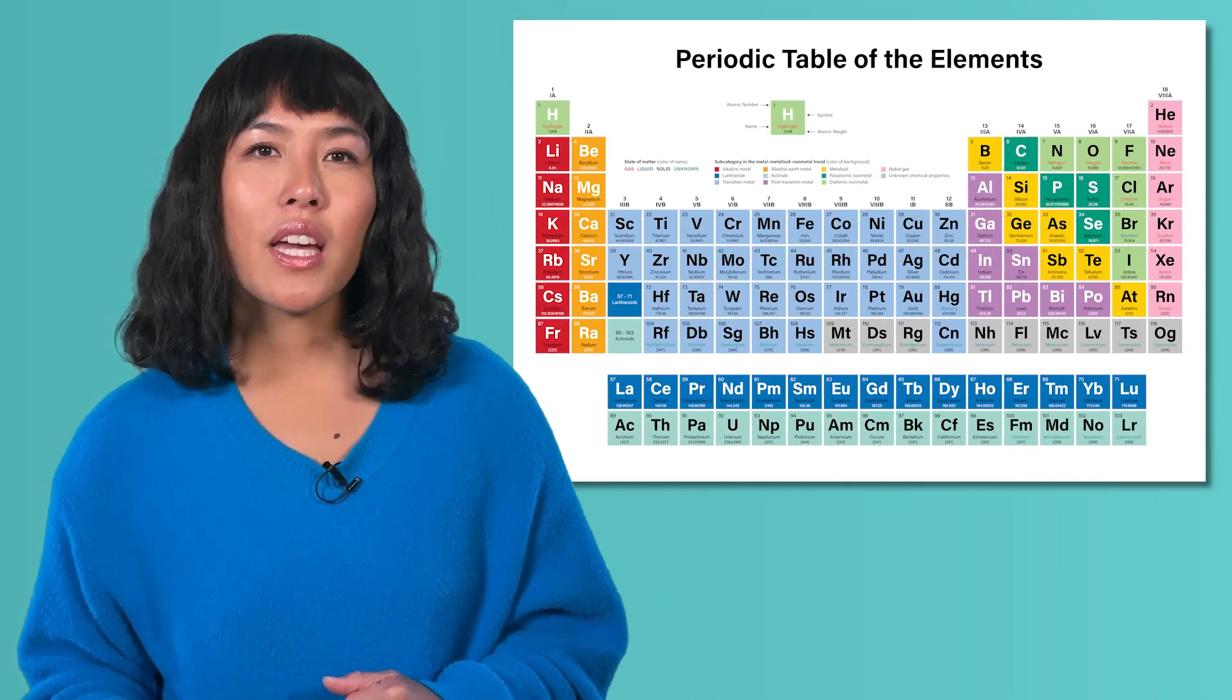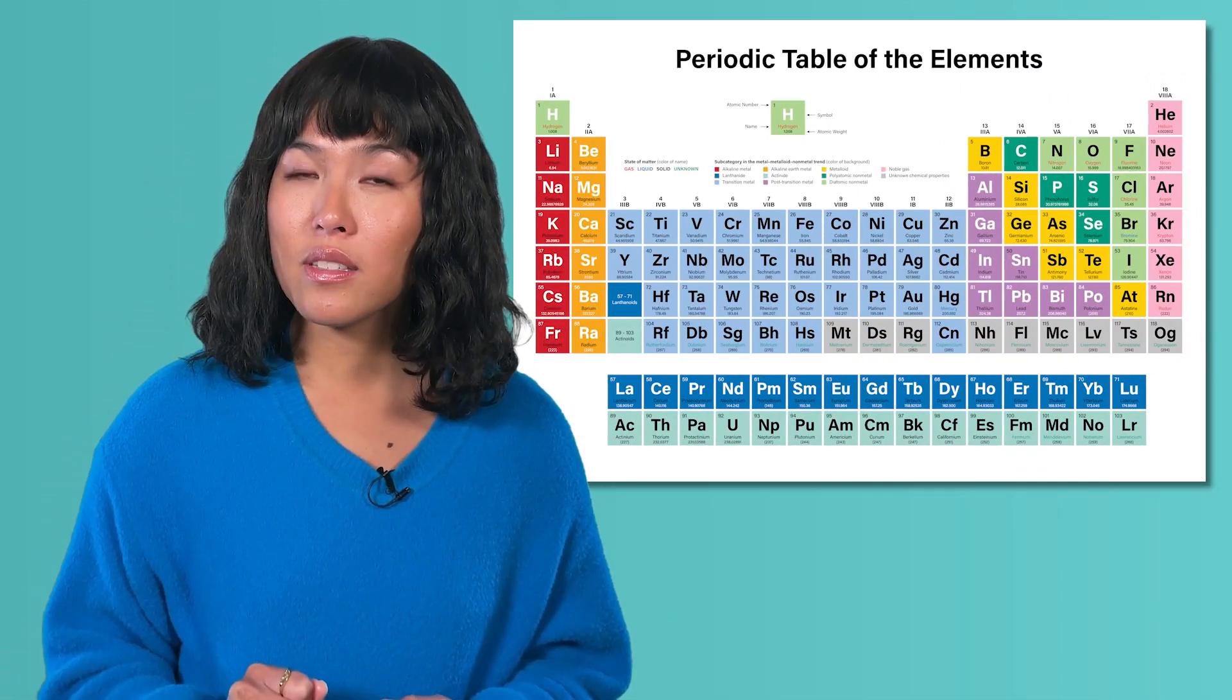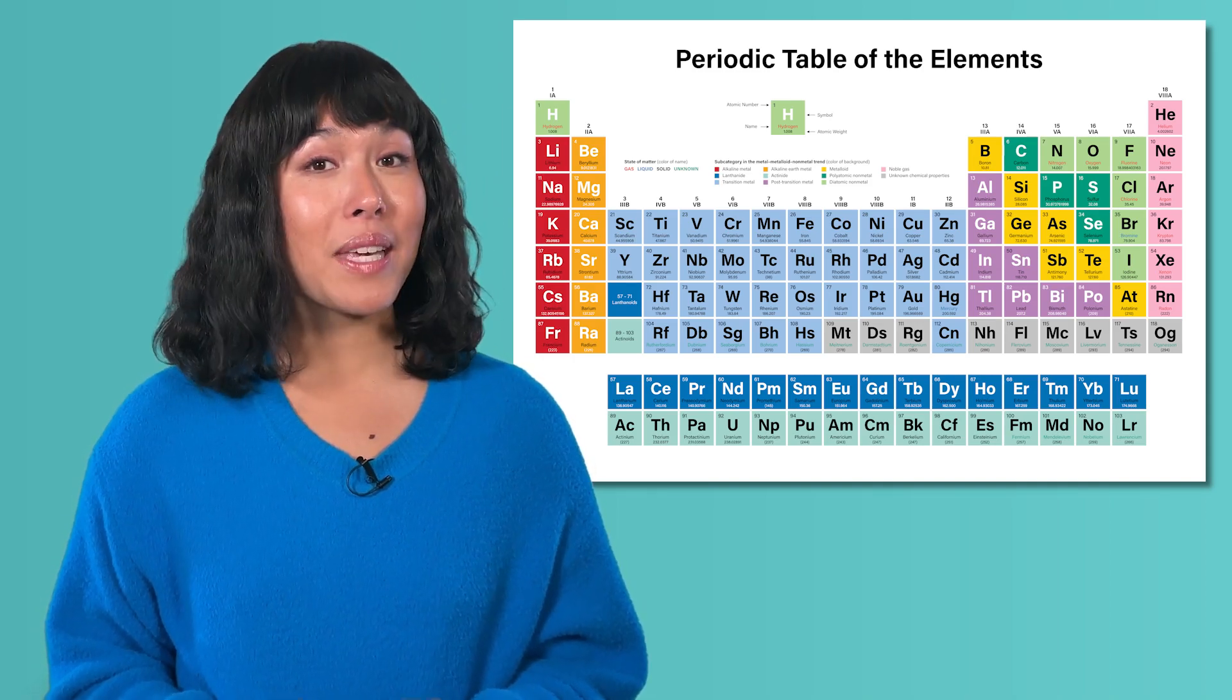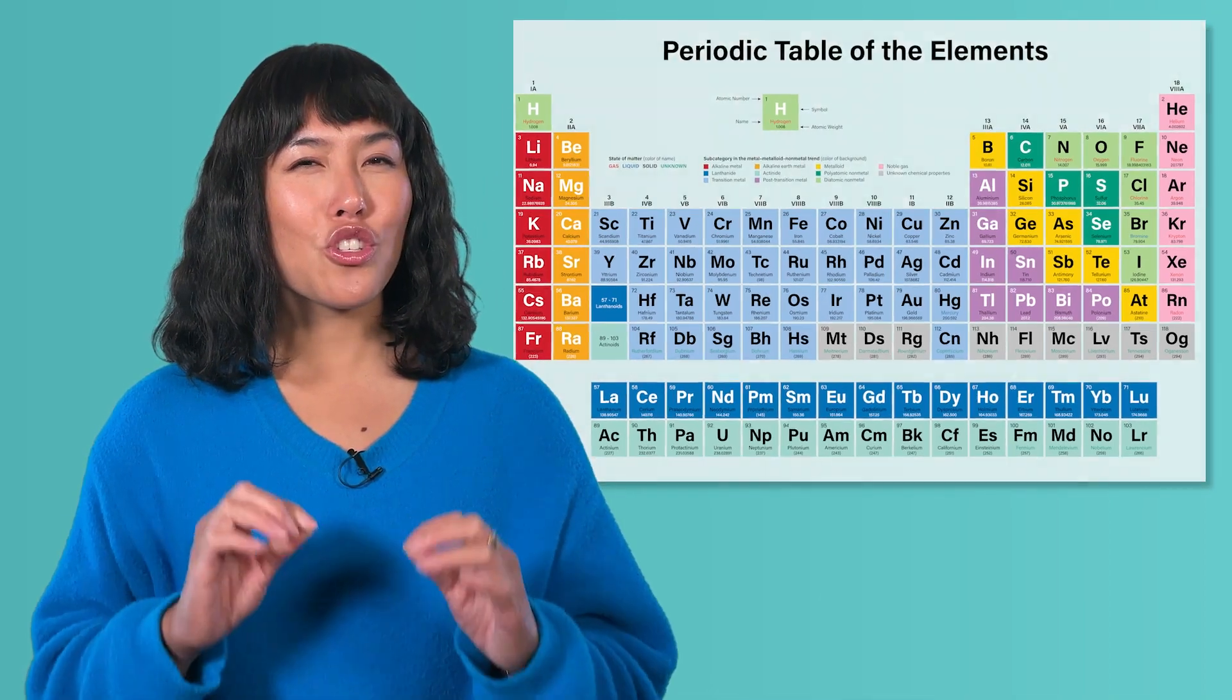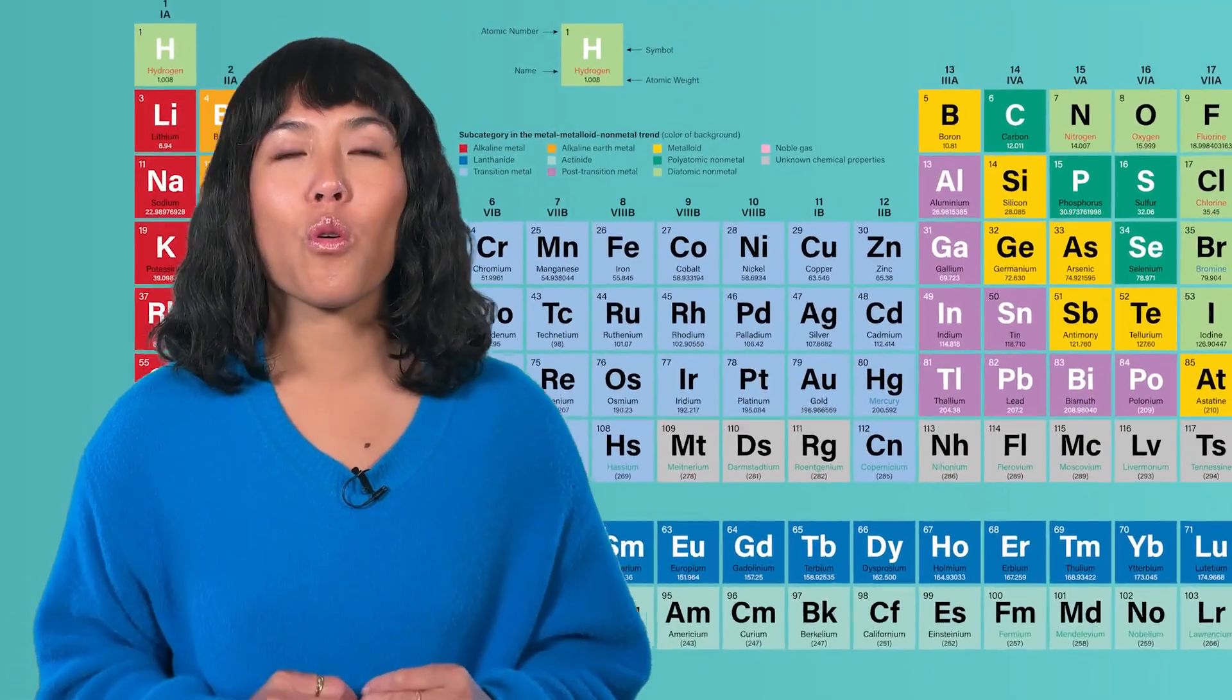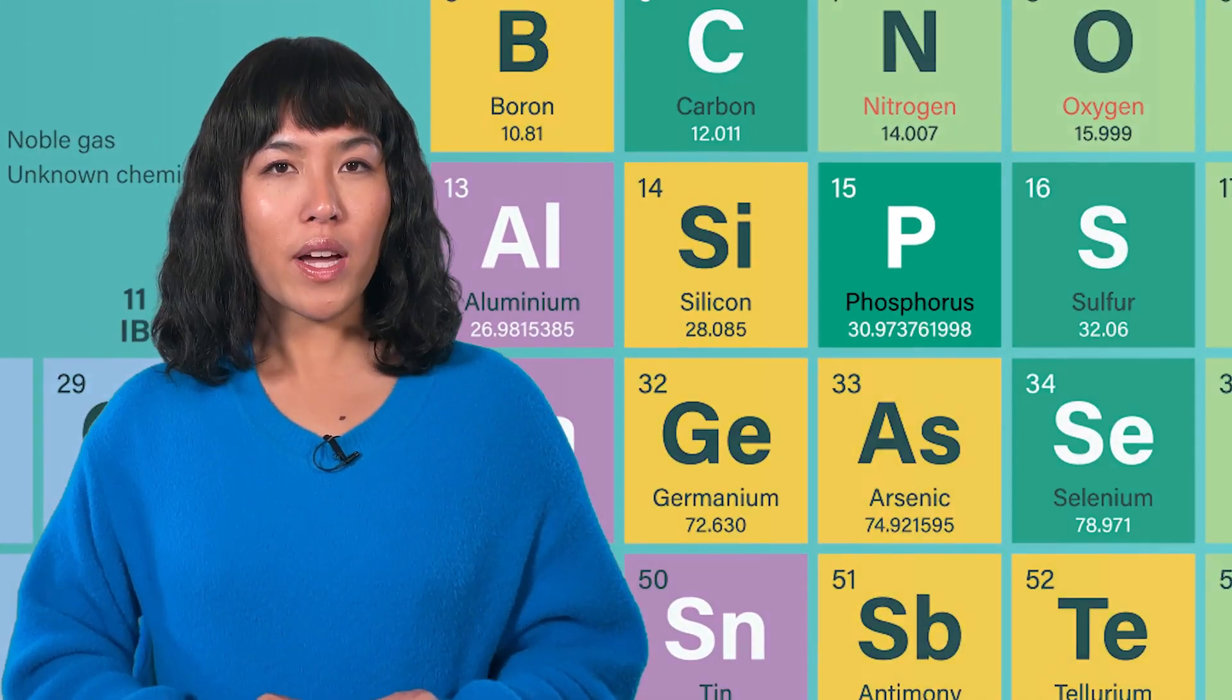Let's look at one more example together. Looking at the periodic table, can you find phosphorus with the symbol of capital P? Let's zoom in on the box for phosphorus. What is the atomic number for phosphorus? It's 15. Knowing the atomic number also means we know the number of protons, which is also 15.